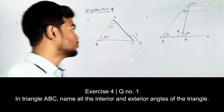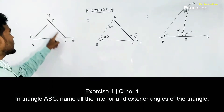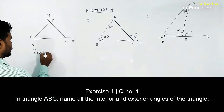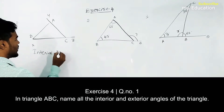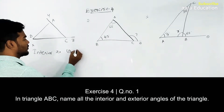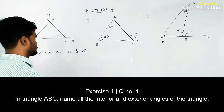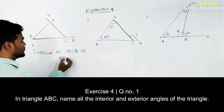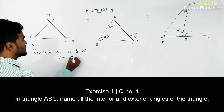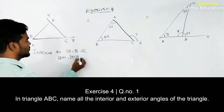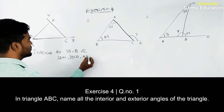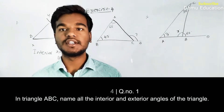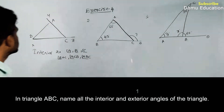From triangle ABC, the interior angles are angle A, angle B, and angle C. We can write these in the format of angle BAC, angle ACB, and angle ABC. These are the interior angles.